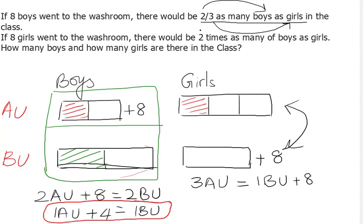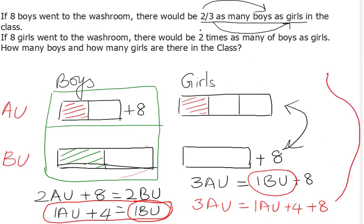I'm going to transfer this value of one b unit and substitute that here. So when I do that, it becomes three a units is equal to one b unit, which is equal to one a unit plus four. One a unit plus four, which is equal to one b unit plus eight. So I'm just going to write down here: three a units equals one a unit plus 12 (8 plus 4 is 12).